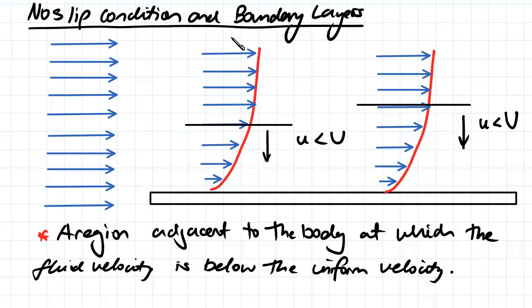So we essentially have what's called a boundary layer and the boundary layer is essentially the region that's adjacent to the body at which the fluid velocity is below the uniform velocity.